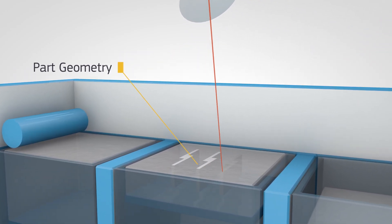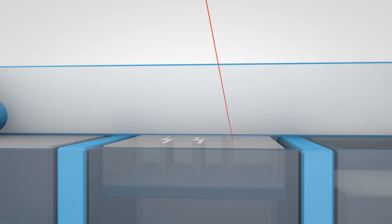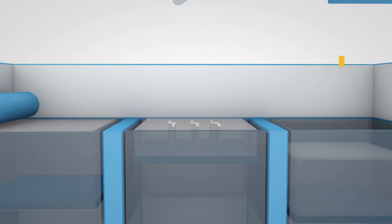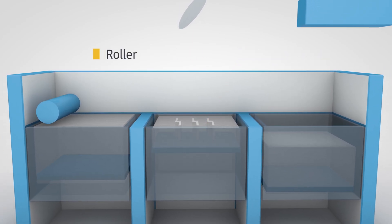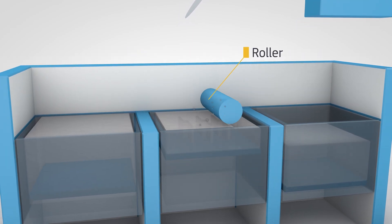Each layer of part geometry is then sintered into a heated bed of nylon. Pistons move the supply container up and the build chamber down, while a roller moves across the bed to distribute the next layer of powder.